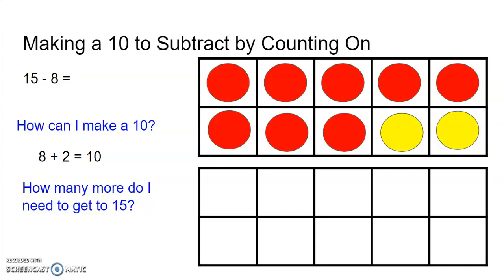Then I ask myself, how many more do I need to get to 15? So I am at 10. Let's count and add counters until I am on 15. So 10, 11, 12, 13, 14, 15. Once I am on 10, I can also just know that 10 plus 5 is 15.